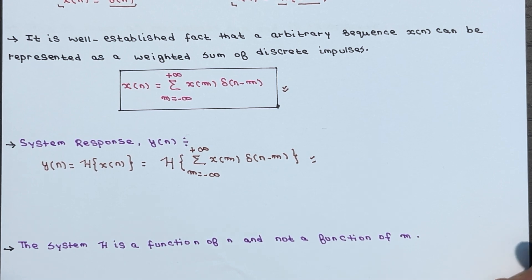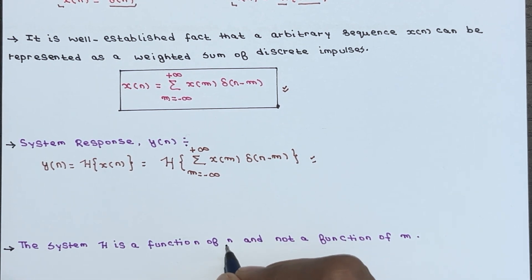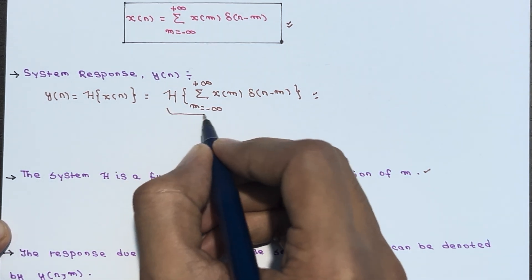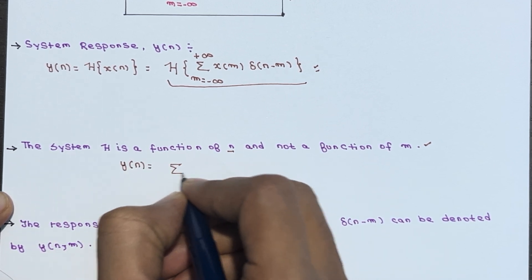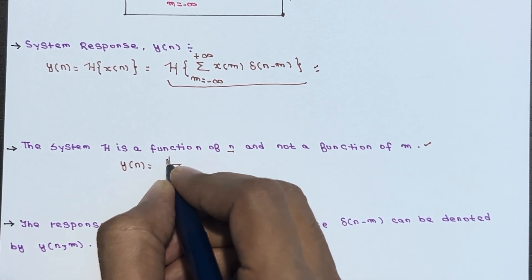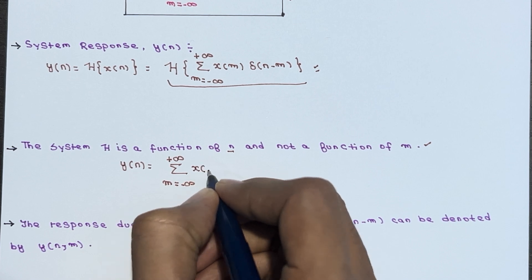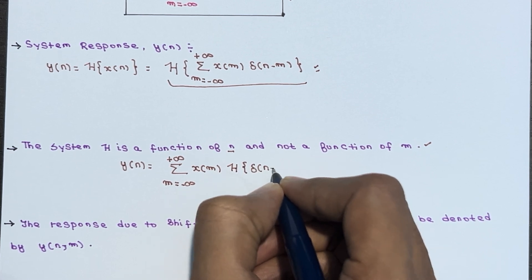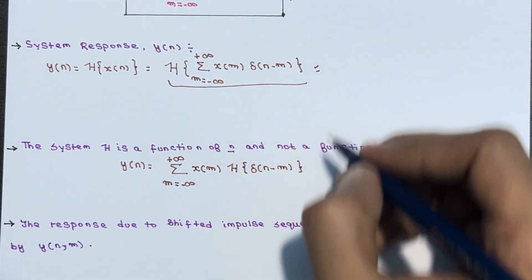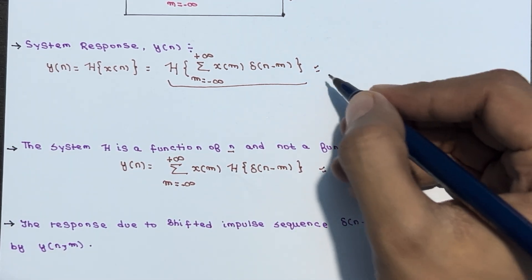The system H is a function of n, not a function of m. Because it is a function of n, we can write y(n) = Σ X(m)·H{δ(n−m)}, where m ranges from −∞ to +∞.